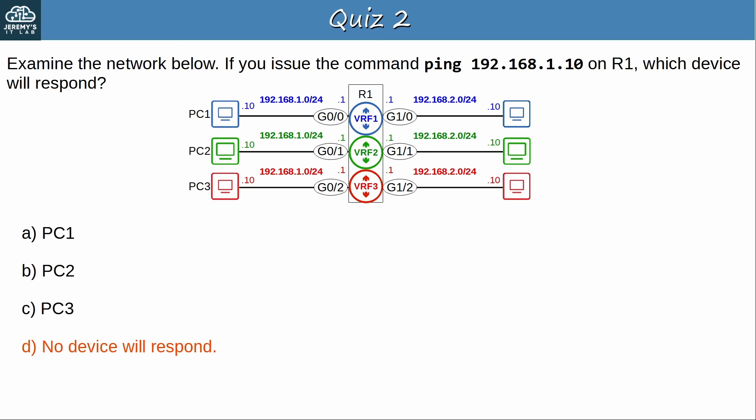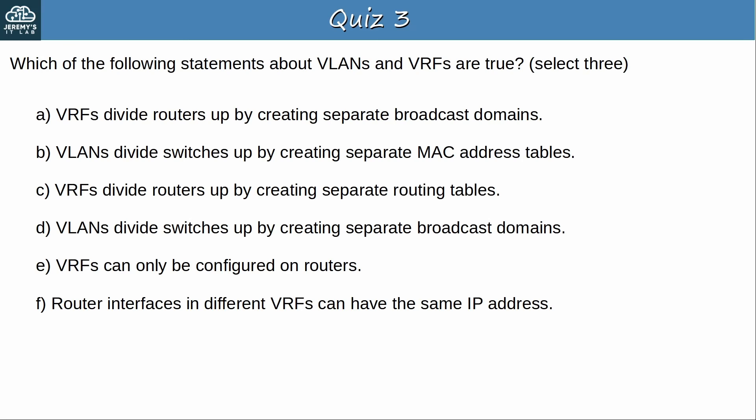Question 3: Which of the following statements about VLANs and VRFs are true? Select 3. The answers are C, D, and F. VRFs divide routers up by creating separate routing tables — in effect, dividing the router into separate virtual routers. VLANs divide switches up by creating separate broadcast domains. And router interfaces in different VRFs can have the same IP address. A is incorrect because VRFs do not create separate broadcast domains — router interfaces are already in separate broadcast domains anyway. B is wrong because VLANs do not create separate MAC address tables; the switch still keeps one MAC address table. E is wrong because VRFs can also be configured on SVIs and routed ports of multilayer switches, not just on routers.